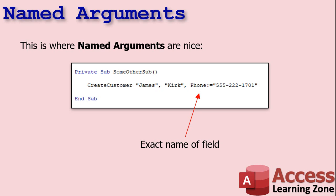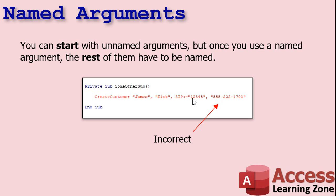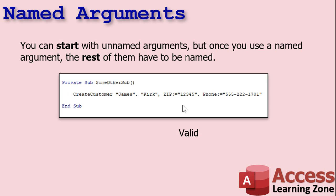This is where named arguments are nice. You specify your required ones first — you don't have to specify a name for those. Then for the optional ones, you put the exact name of the field as it appears in your parameter declarations, followed by a colon-equals, and then your value. So you can say first name, last name, and then phone number colon-equals that value — no need to type all those commas. Anyone reading the code will find it much more intelligible. Once you start with a named argument, the rest of them have to also be named. You can have unnamed ones up front, but as soon as you name one, the rest must be named as well.